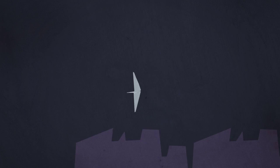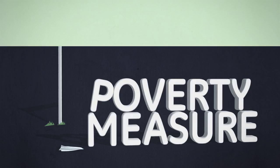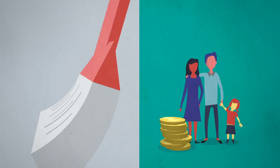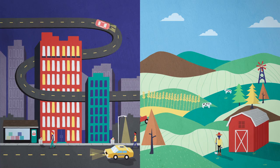Its shortcomings, however, were stark. Not only was the food plan unrealistic for daily life, the measure was absolute — a family that earned even one penny more would not be considered poor. More limitations soon emerged. Life is more or less expensive depending on where you live, and the measure doesn't take this into account.